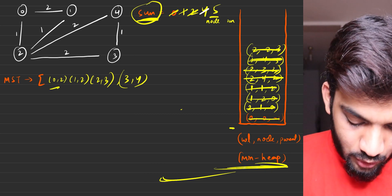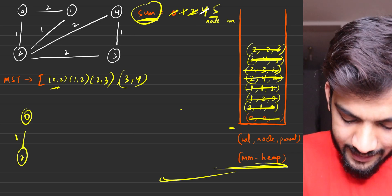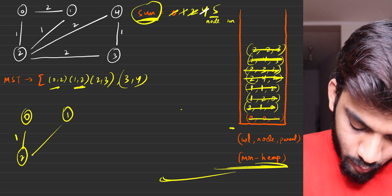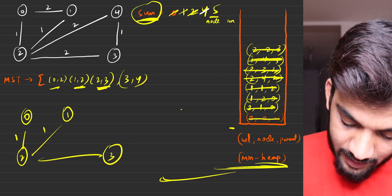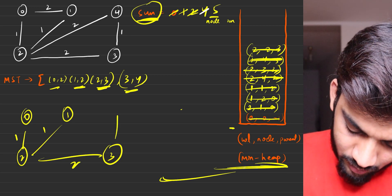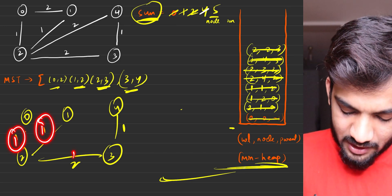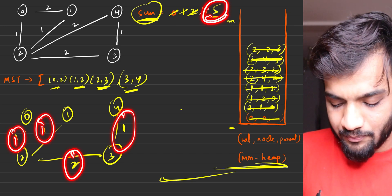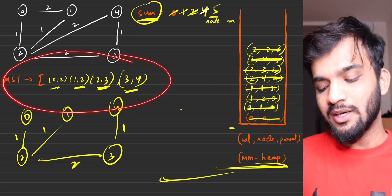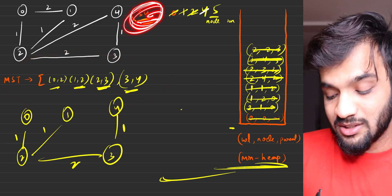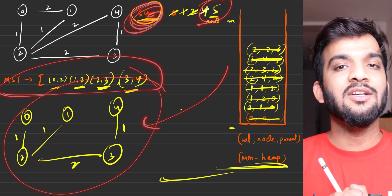Let's verify the MST. First edge: 0 to 2, edge weight 1. Next: 1 to 2, edge weight 1. Next: 2 to 3, edge weight 2. Next: 3 to 4, edge weight 1. So 1+1+2+1 = 5, which is our sum, and this is your MST. Successfully found the MST sum and the MST itself.